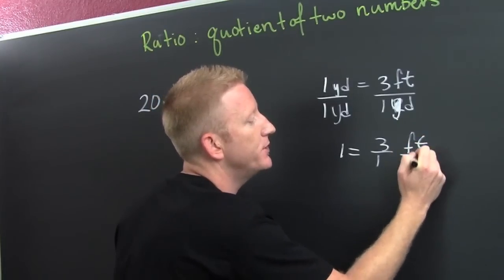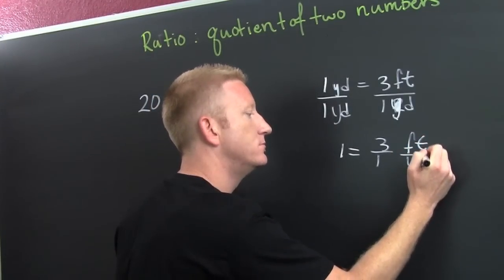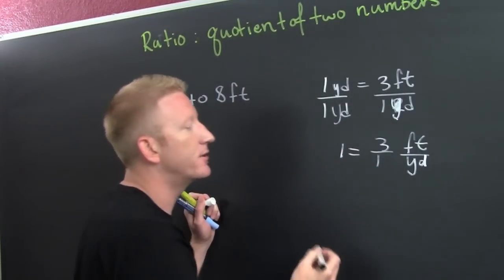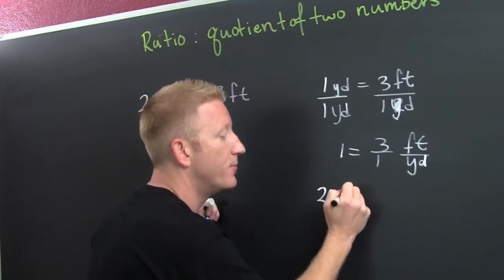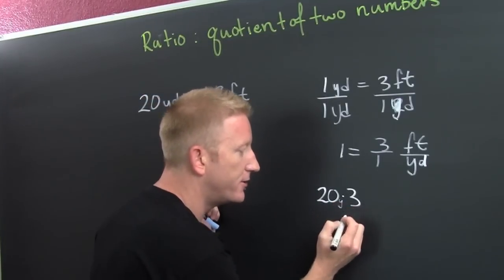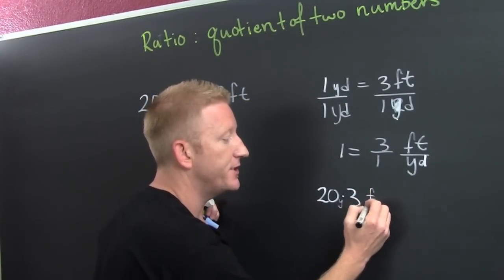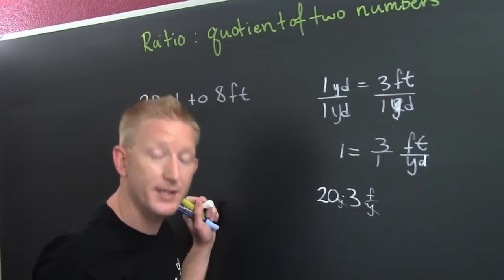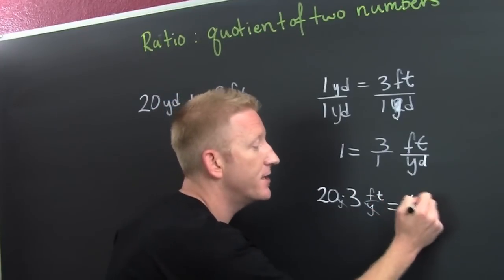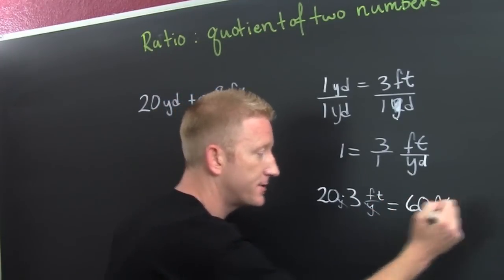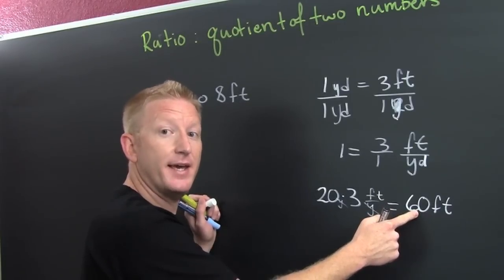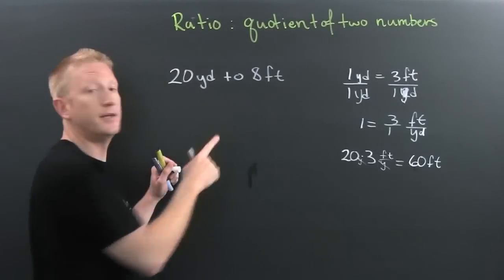So one yard equals three feet — that works. Now I take the 20 yards and multiply it by three feet per yard. The yards cancel out in the unit analysis and I'm left with feet. So 20 yards times 3 is 60 feet. So 20 yards equals 60 feet.